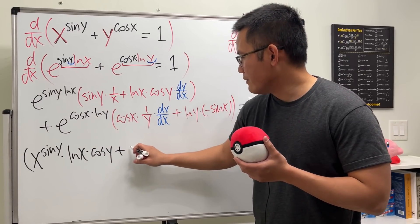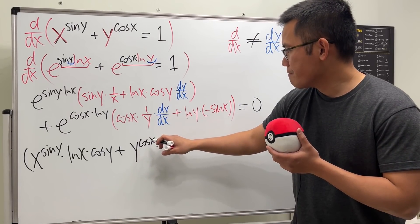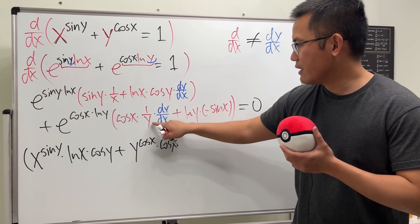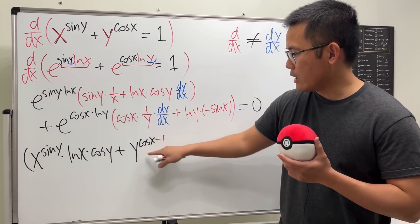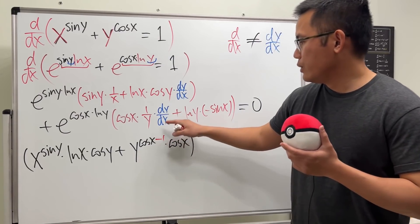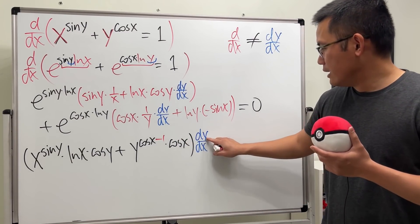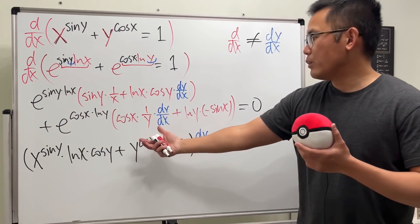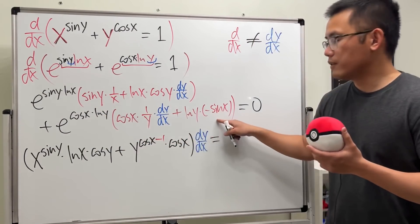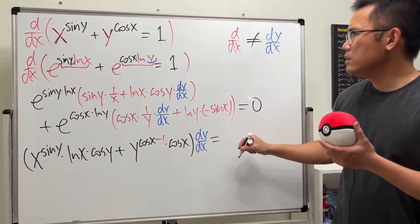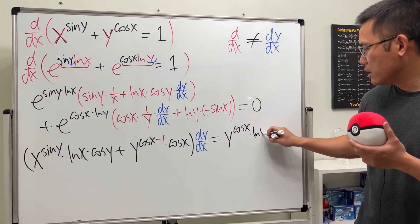For the second term: e^(cos x · ln y) is y^(cos x), so we get y^(cos x) · cosine x · (1/y) · dy/dx, which simplifies to y^(cos x − 1) · cosine x · dy/dx. We also have the ln y · (−sin x) term from the other part of the product rule. All the dy/dx terms are collected together.